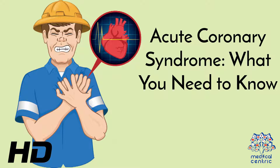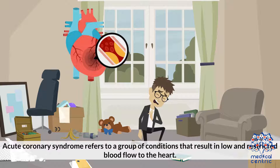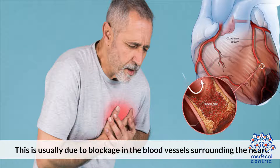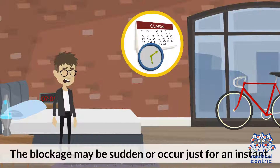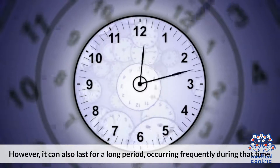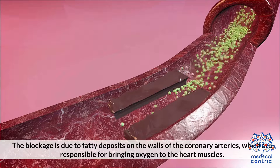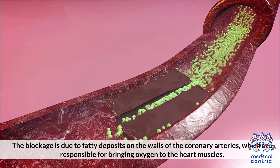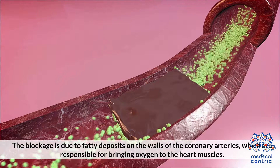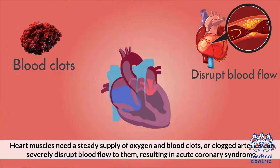Today's topic is Acute Coronary Syndrome. Acute coronary syndrome refers to a group of conditions that result in low and restricted blood flow to the heart. This is usually due to blockage in blood vessels surrounding the heart. The blockage may be sudden or occur just for an instant, or it can also last for a long period, occurring frequently during that time. The blockage is due to fatty deposits on the walls of the coronary arteries, which are responsible for bringing oxygen to the heart muscles. Heart muscles need a steady supply of oxygen, and blood clots or clogged arteries can severely disrupt blood flow to them, resulting in acute coronary syndrome.